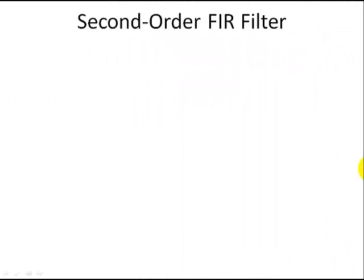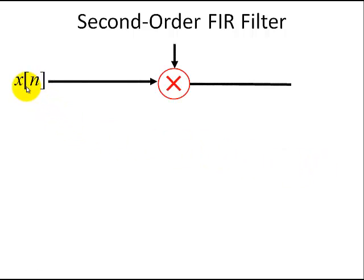Now we're going to take the building blocks from the previous slide and build a second order FIR filter. So we'll start off with an input. We're going to multiply it by a constant, B sub 0, and B0 times x[n] leads to an output of B0x[n].